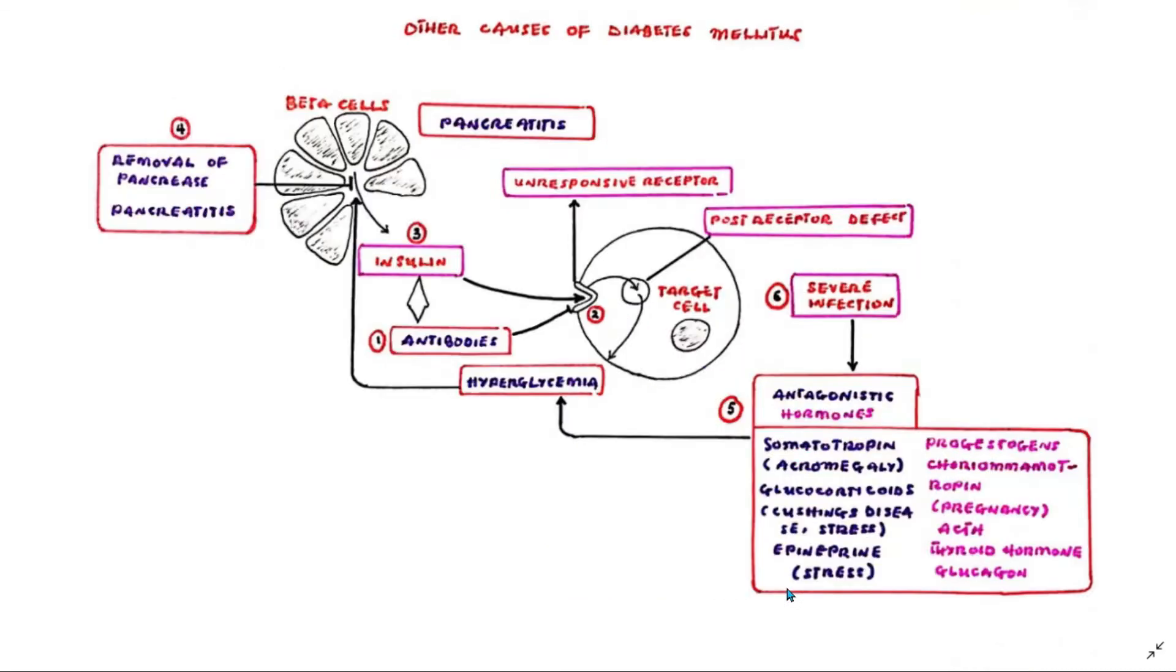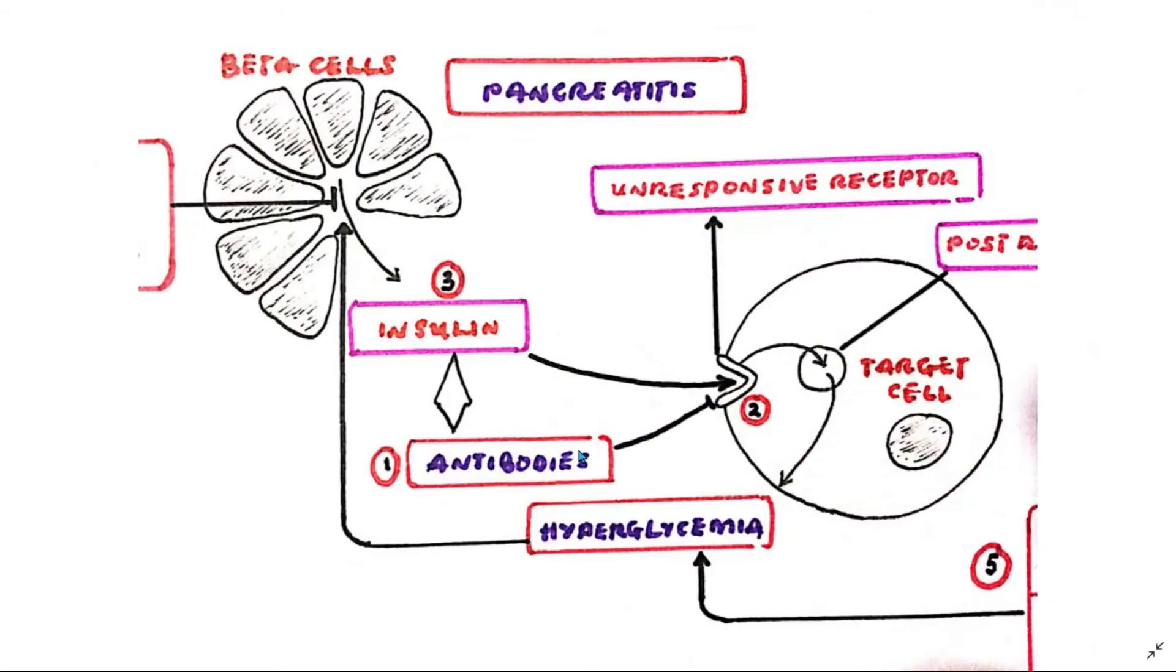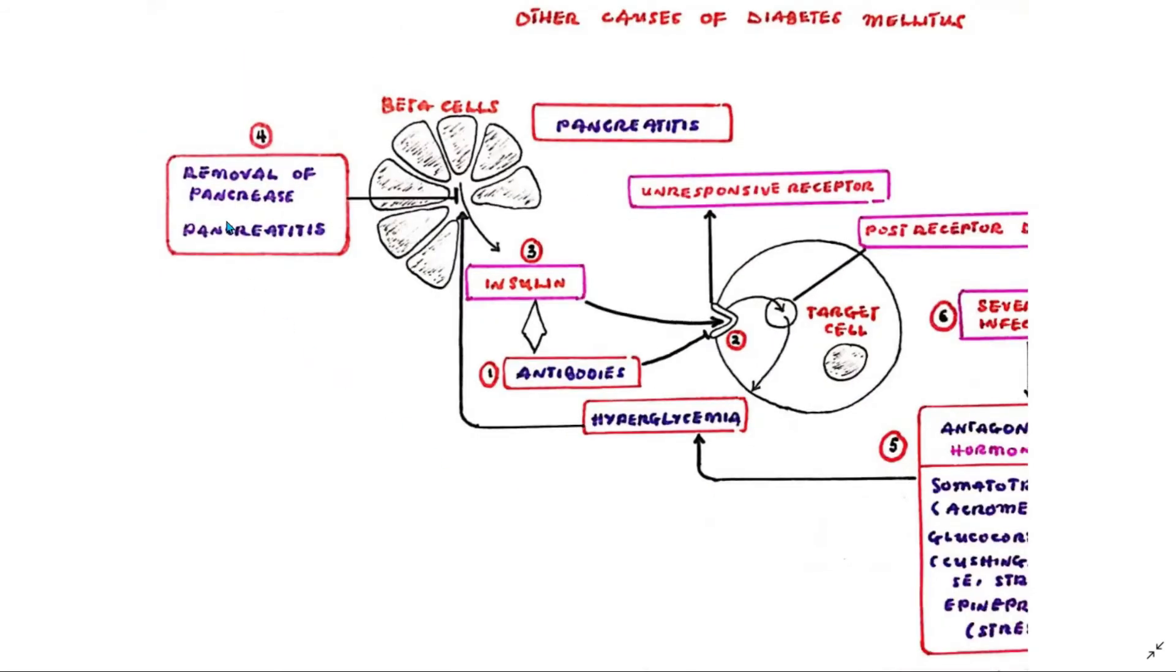Relative insulin deficiency can also be caused by autoantibodies against receptors or insulin. Even without any genetic disposition, diabetes can occur in the course of other diseases such as pancreatitis with destruction of the beta cells, or even by toxic damage to these cells.